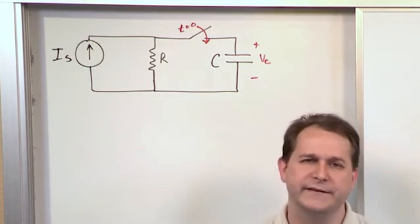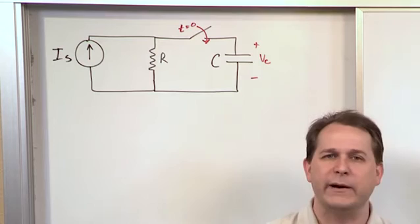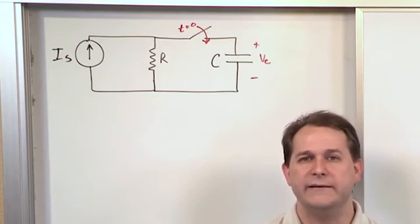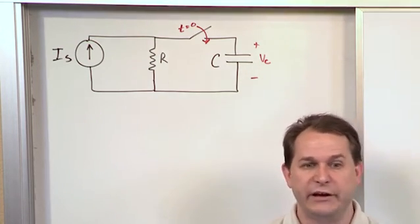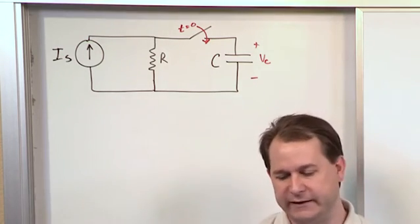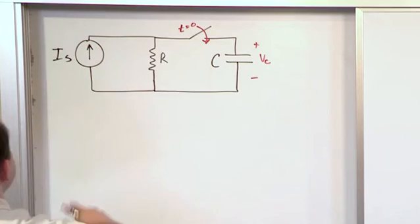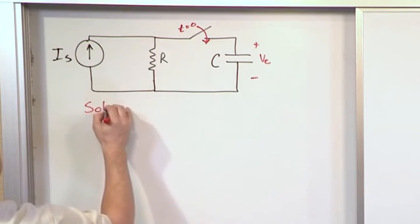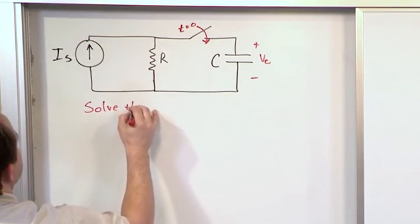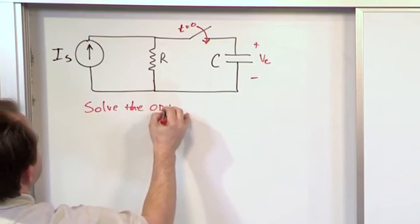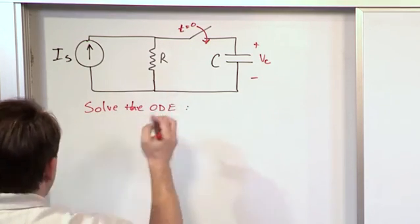The details are different. The exact way in which it happens is a little bit different. But the overall idea of those guys being duals of one another is basically the same. So if we solve the ordinary differential equation, we're going to get the following.